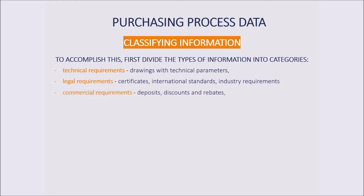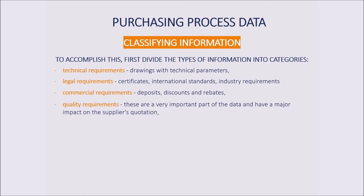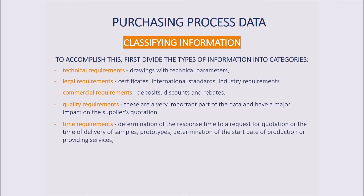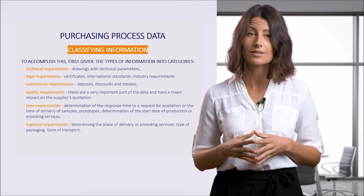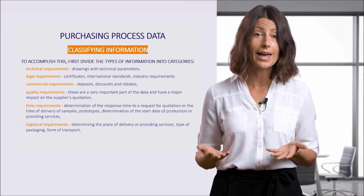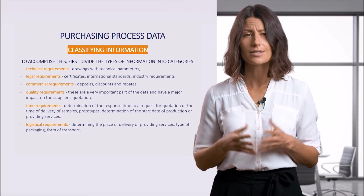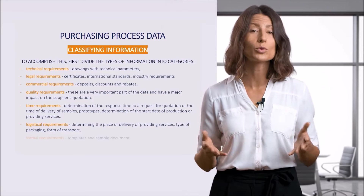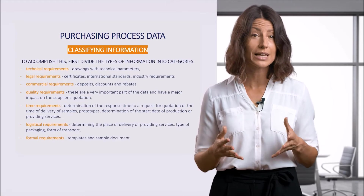Commercial requirements include deposits, discounts, and rebates — in the automotive industry, for example, it is standard practice to reduce the price of a component supplied every year. Quality requirements are a very important part of the data and have a big influence on the supplier's quotation, in particular on price and lead time. Time requirements involve determining the response time to a request for quotation, the delivery time for samples or prototypes, and the start date of production or services. Logistical requirements determine the place of delivery, type of packaging, form of transport — whether air, road, or rail — and who is responsible for its organization. Formal requirements cover the documentation accompanying the whole process, templates, and sample documents.